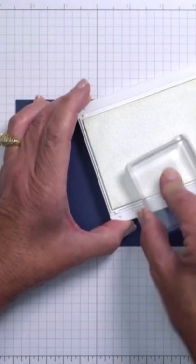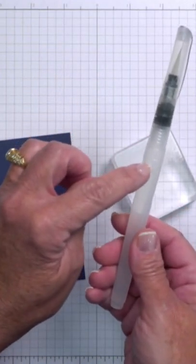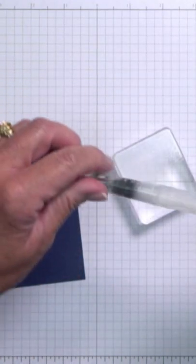This is a pigmented ink. I'm picking up a little color here on my clear block. I'm going to use the water painter. It's self-contained so there's water inside the barrel.